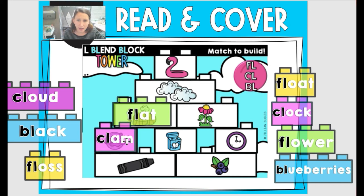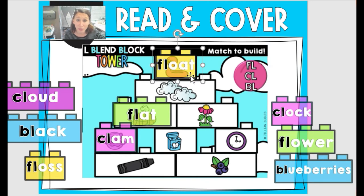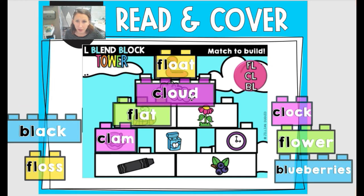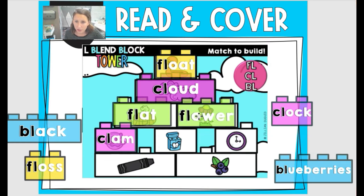Where do we see a clam? It is down here. Let's try this yellow one: FL-OAT. Float. Where is float? It would probably be this one right here with the floaty that you bring to the pool. CL-OUD. Cloud. And then we have FL-OWR. Flower. Good job.